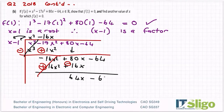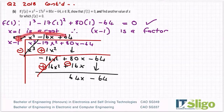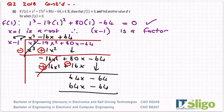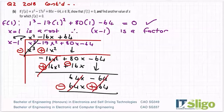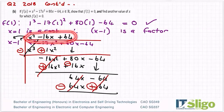Take down the 64 that hasn't been used yet. What must I multiply by x to get 64x? That's plus 64. Multiply by everything on the outside: 64 times x is 64x, 64 times minus one is minus 64. Change the sign, cancel — remainder zero. So the other two roots of this cubic equation are within the quadratic x squared minus 16x plus 64, and if I solve that I will get the other two roots.